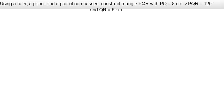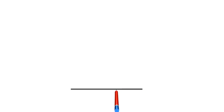So we're going to start by drawing line segment PQ of length 8 cm. So this is PQ. We're going to label the two ends, P and Q.